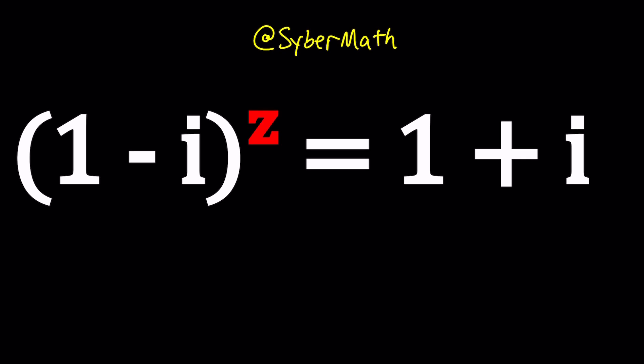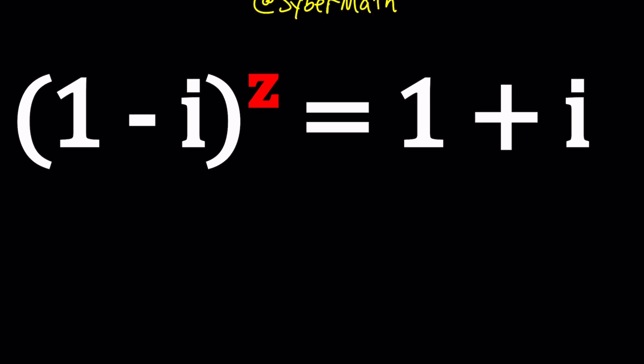Now you might be thinking, why don't we just log both sides? Any base is fine, but in this case you would want to use the natural log, which is the ln, right? Because we're going to need to talk about something called complex logarithm.